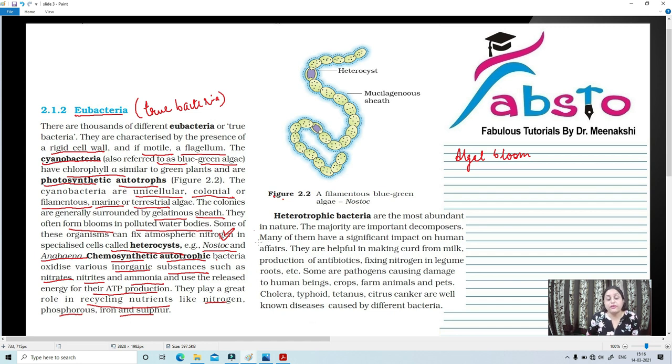Now next we are going to talk about heterotrophic bacteria which are the most abundant. So heterotrophic bacteria are the most abundant in nature and majority of them are decomposers. That is they thrive on dead, decaying substances. Many of them have a significant impact on human affairs. Again, here we are going to talk about the economic importance. We have already talked about the economic importance of archaebacteria. They were used as methanogens. Just like cyanobacteria, they are used to fix atmospheric nitrogen plus they help in the recycling of nutrients. Again, we are going to talk about heterotrophic bacteria and economic importance. They are decomposers and they are helpful in making curd from milk. They help in the production of antibiotics.